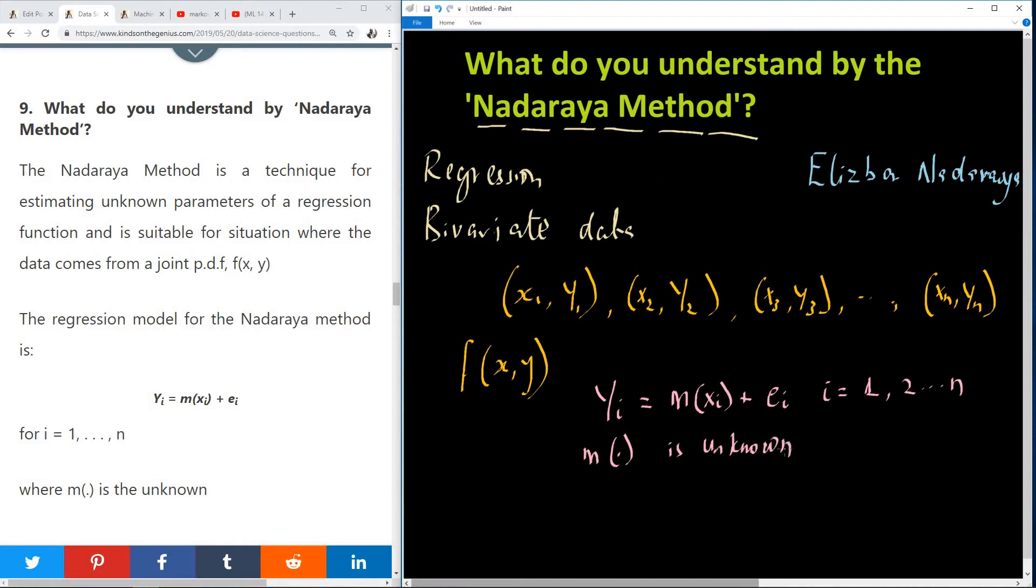So for me, I think you may not have to spend any time on this. Just knowing that in data science, you may come across Nadaraya method. And remember that we are talking about regression bivariate data. And the two points are coming from, assumed to be coming from a joint probability distribution.